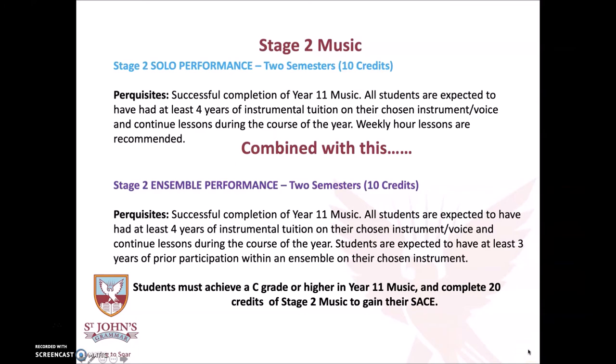So how does Stage 2 Music work? You can take solo performance or ensemble performance, which are obviously performance-based subjects. You need to make sure that you choose both of these, because they are 10 credits each, which combined create the 20-credit full year of music. You obviously need to continue having your voice or instrumental lesson, or be part of an ensemble, and achieve a C grade or higher in Year 11 Music.